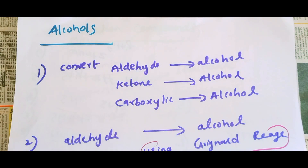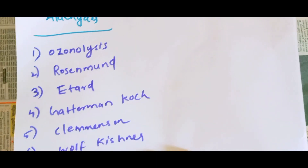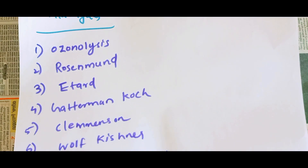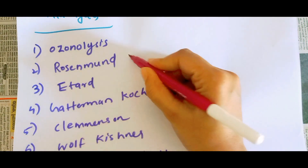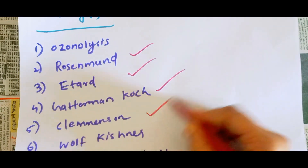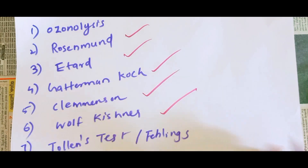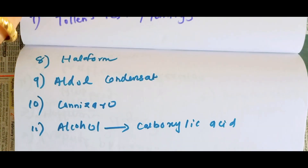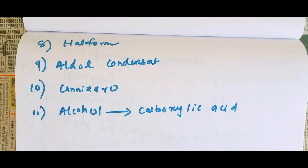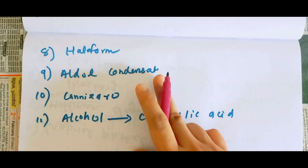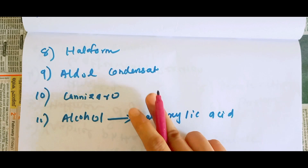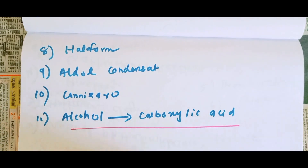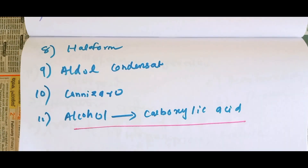Aldehyde topics: Ozonolysis, Rosenmund reaction, Etard reaction, Gattermann-Koch reaction, Clemmensen reduction, and Wolff-Kishner reduction. We'll begin the video on these topics. Tollens' test is also covered.